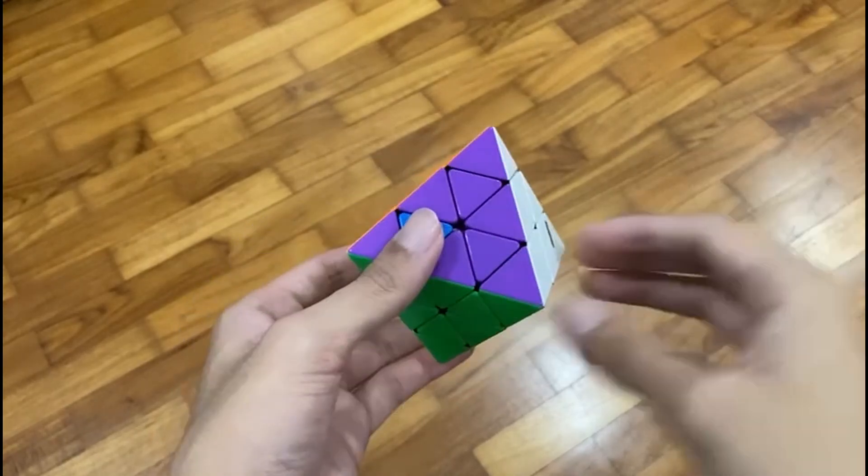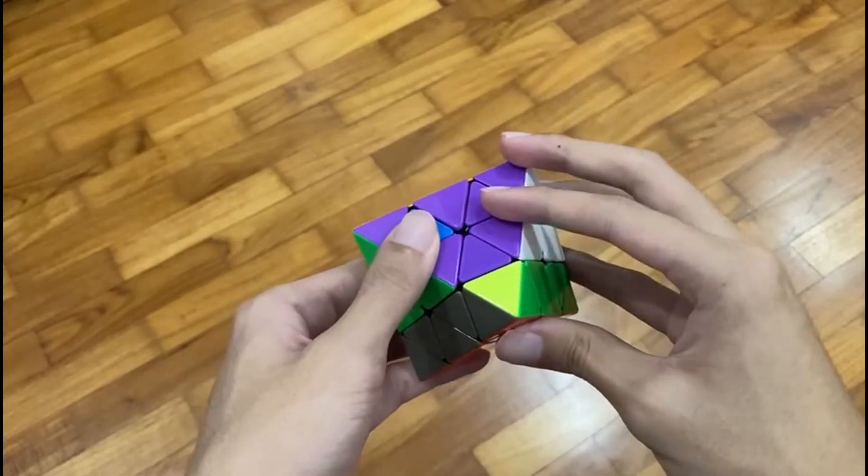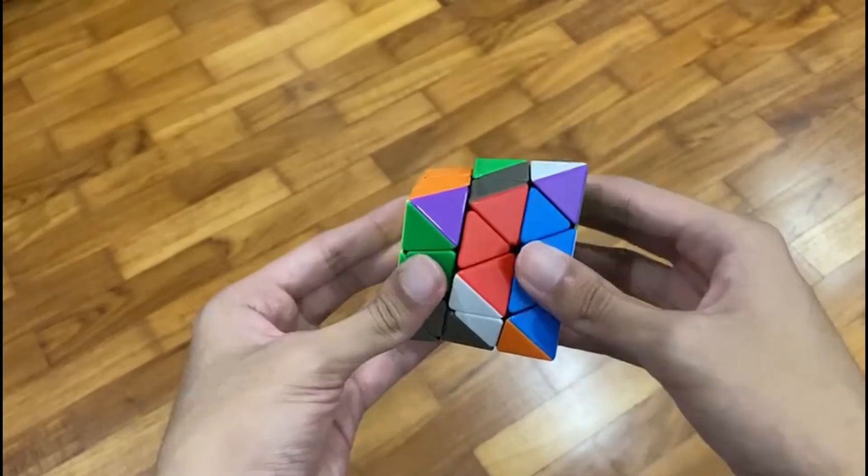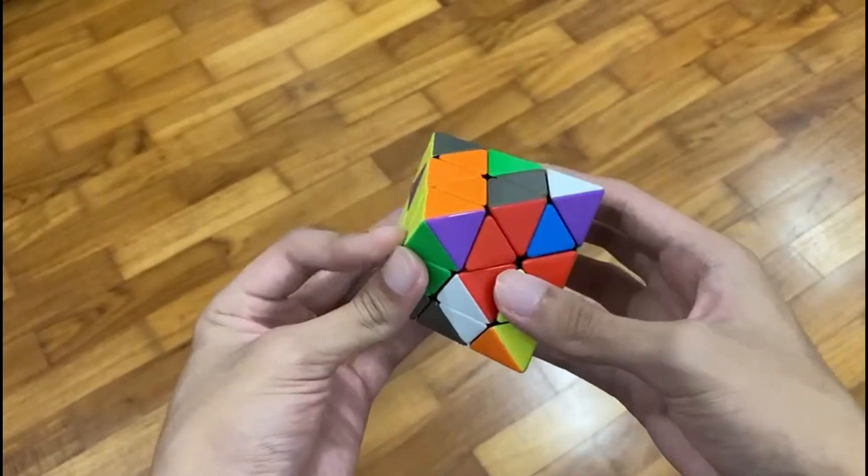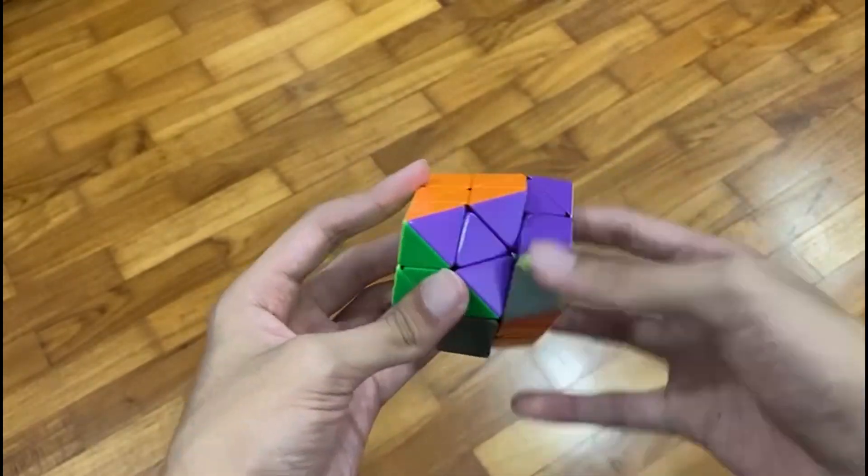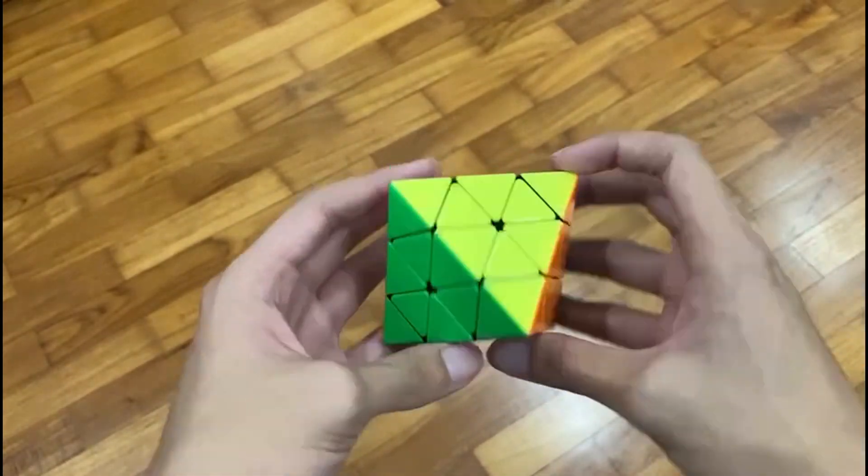except that before doing that, you want to do a D and an R. So those are going to be your setup moves. Then you just do the algorithm as per normal, and you just undo the setup moves. And you're done solving the FTO.